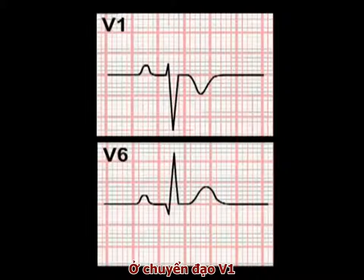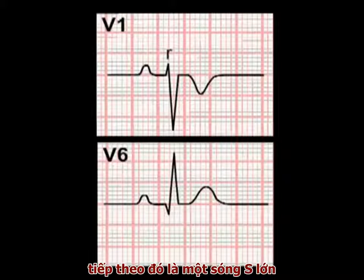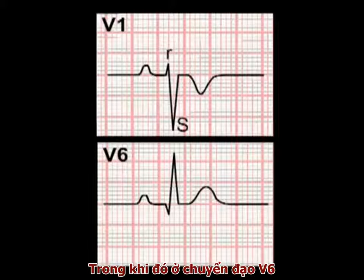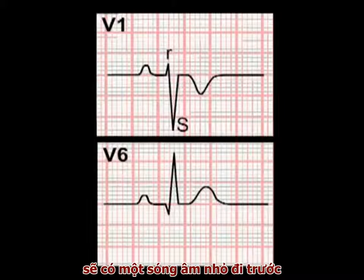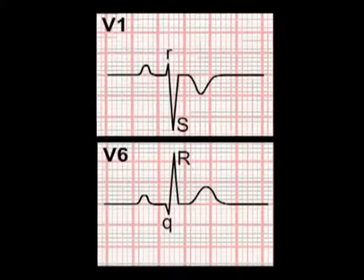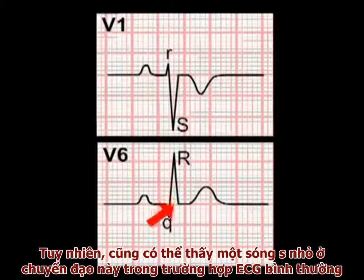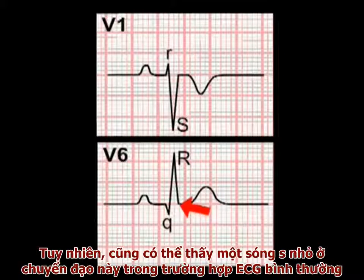In lead V1, the classical morphology of the QRS complex is a small R-wave followed by a larger S-wave. While in lead V6, an initial small negative deflection — a Q-wave — is followed by a large R-wave. In the example shown here, there is no S-wave present in lead V6, although a small S-wave is seen in this lead in many normal ECGs.